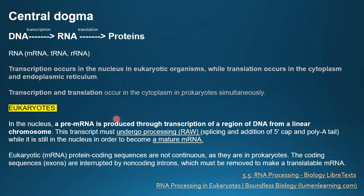In eukaryotes, transcription takes place in the nucleus, producing RNA — specifically a pre-mRNA. 'Pre' here means premature, so a premature RNA is produced through transcription of a region of DNA from a linear chromosome. Eukaryotes have linear chromosomes, while prokaryotes have circular chromosomes. This pre-mRNA transcript must then undergo processing, because it is raw.